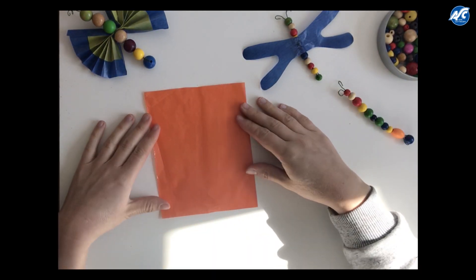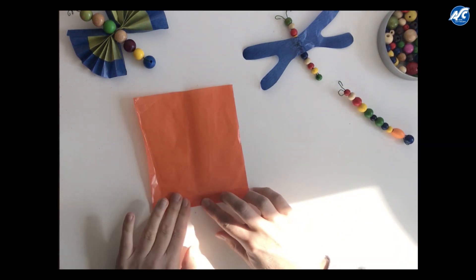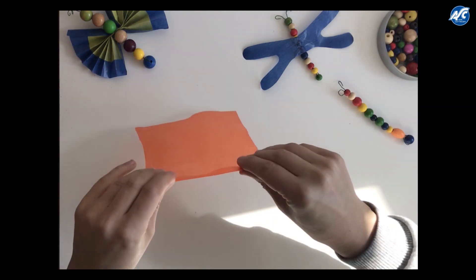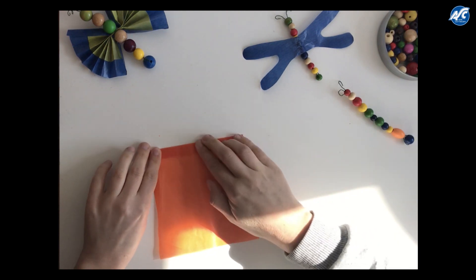You just take some of the transparent paper and then you start folding it like this. Just a little bit. Then you turn it all the way around and fold it like this.